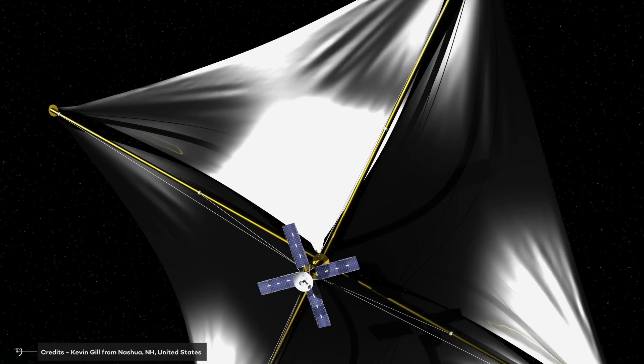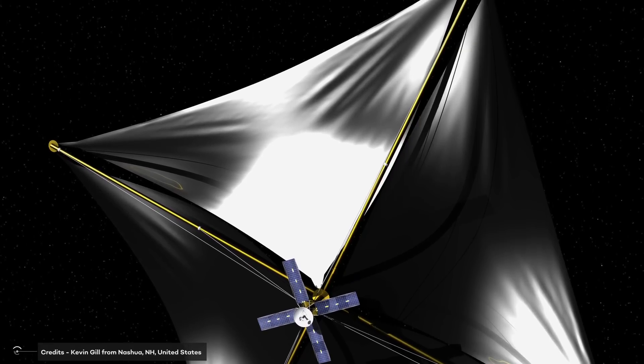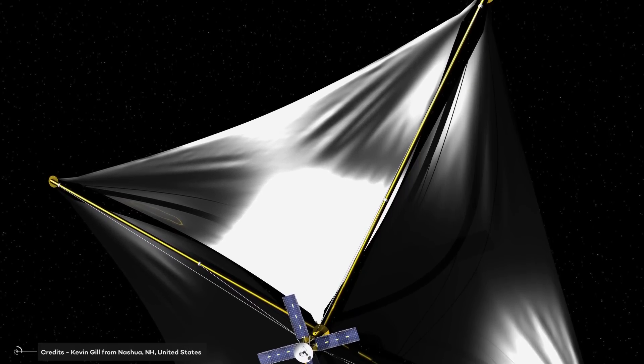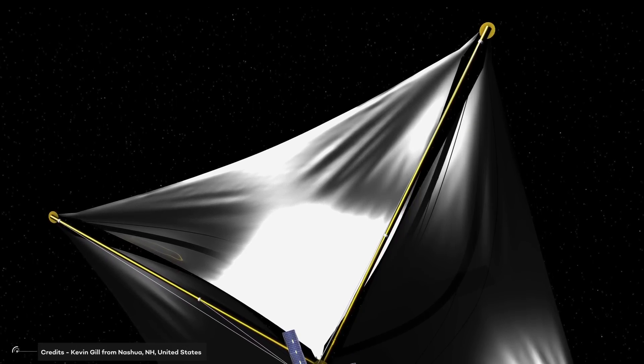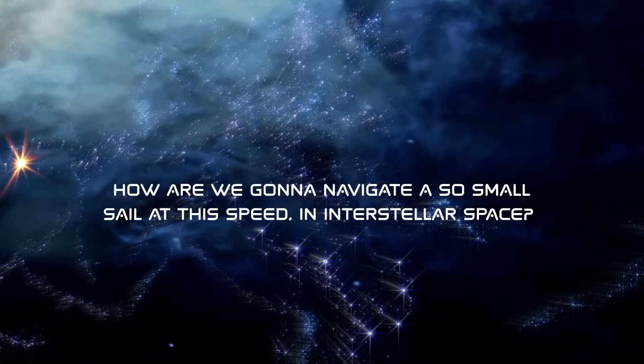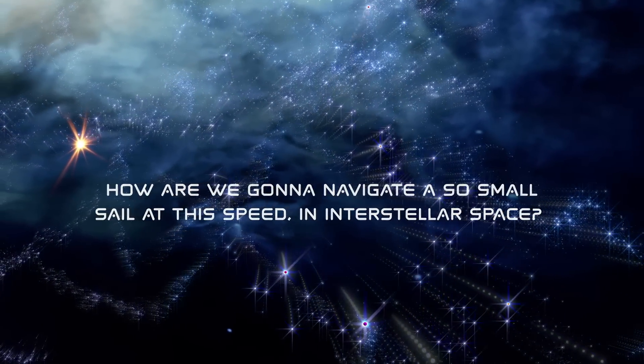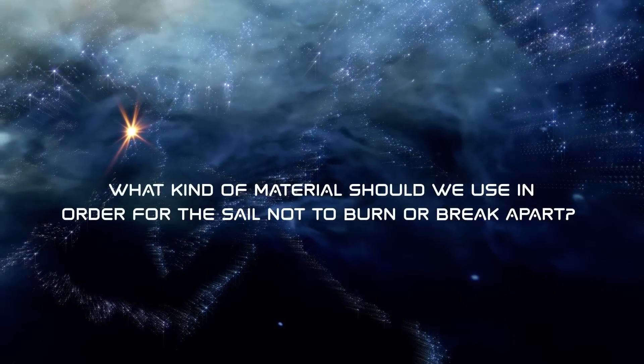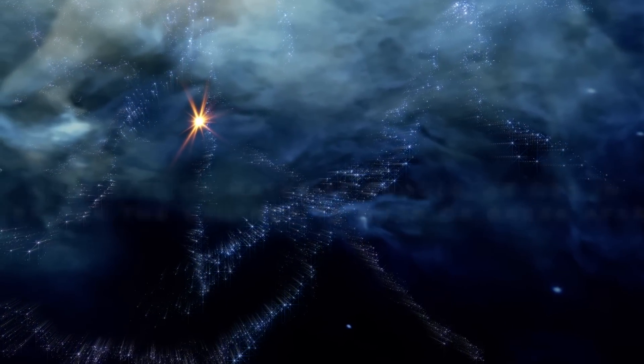However, given the little size of the light sails and their high speed, there are a lot of unsolved problems and questions to be answered. For instance, how are we going to navigate a so small sail at this speed in interstellar space? What kind of material should we use in order for the sail not to burn or break apart? We would need a material that is ultralight, extremely reflective and almost completely non-absorbent while being rigid and stable enough to withstand the force and heat of acceleration.